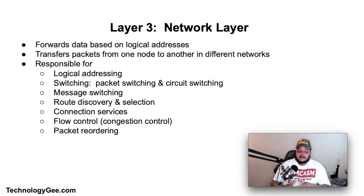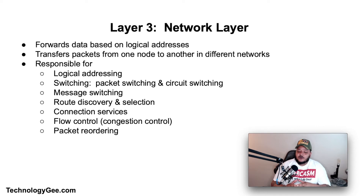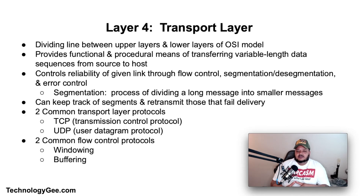If a message is too large to be transmitted on the data link layer, the network layer may implement message delivery by splitting messages into several fragments at one node, sending the fragments independently, and then reassembling them at another node. Message delivery at the network layer is not necessarily guaranteed to be reliable. The network layer is responsible for tasks such as logical addressing, packet switching, circuit switching, message switching, route discovery and selection, connection services, flow control (congestion control), and packet reordering.